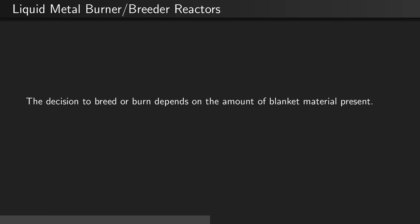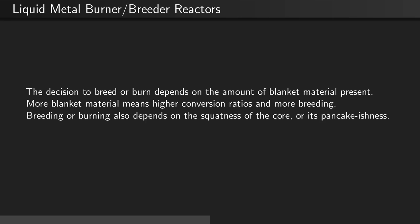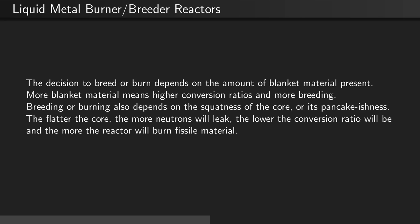The decision to breed or burn depends on the amount of blanket material present. More blanket material means higher conversion ratios and more breeding. Breeding or burning also depends on the squatness of the geometry of the core, or how much the core looks like a pancake. The flatter the core, the more neutrons will leak out, and the lower the conversion ratio will be, and so the more the reactor will burn fissile material rather than breed it in.